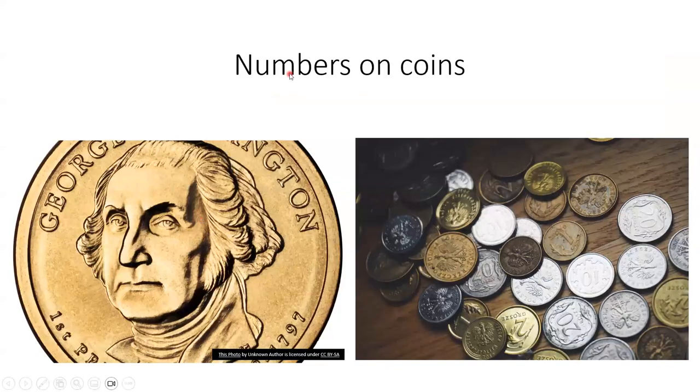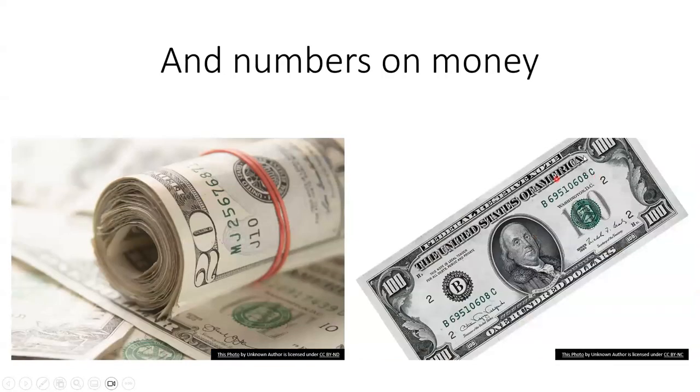Numbers on coins. This is a coin. We have a number on it: 20, 10, 20. Numbers on money. This is the money: 100 dollars.